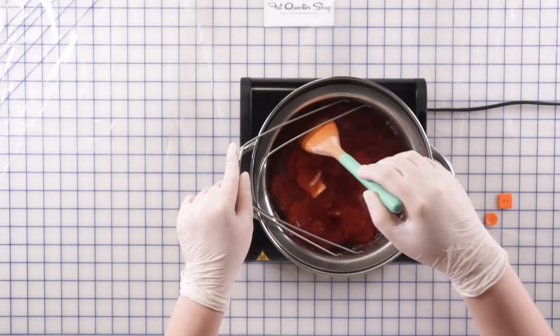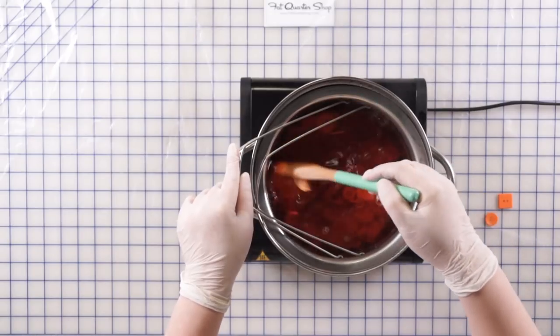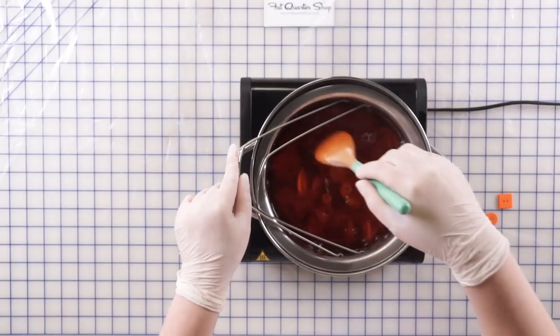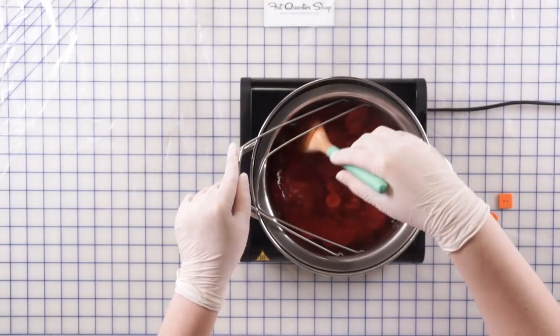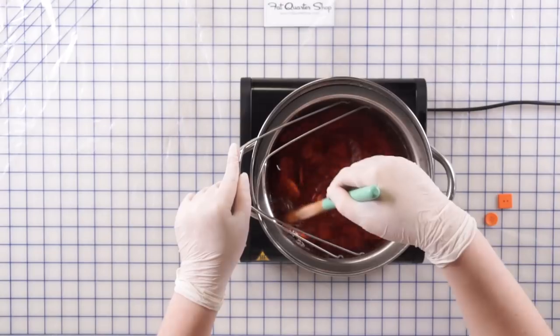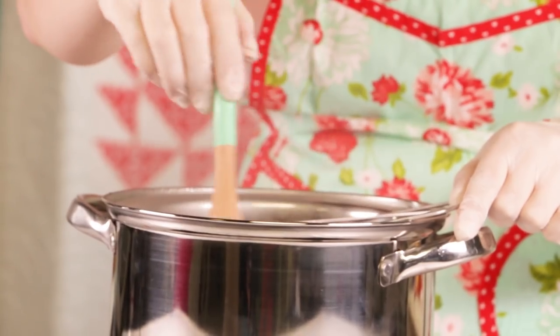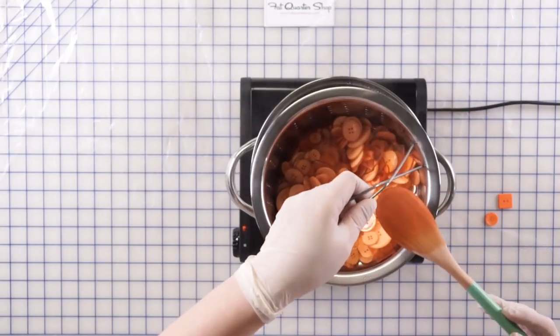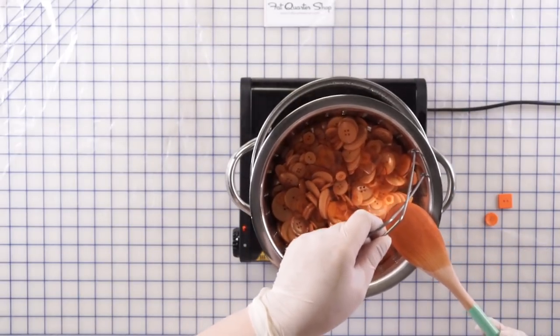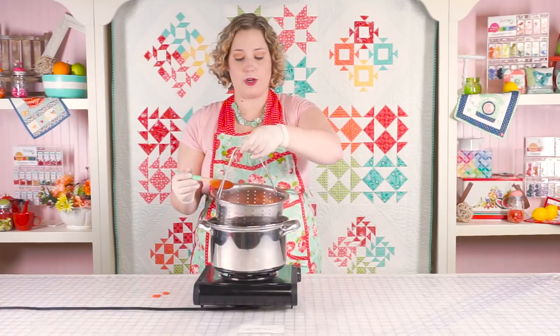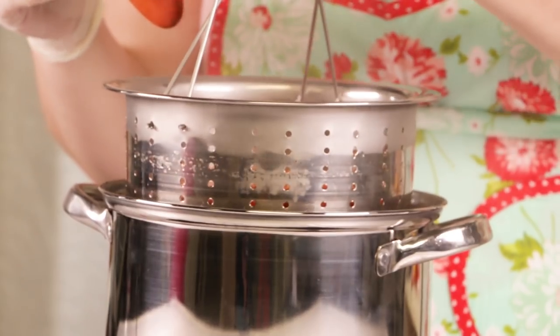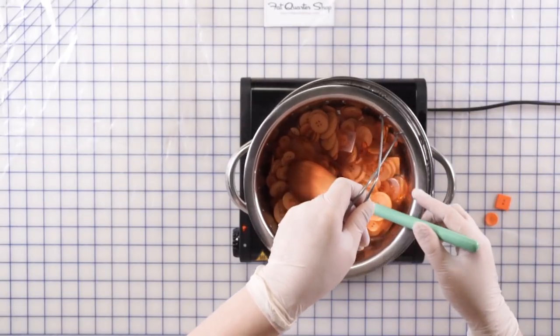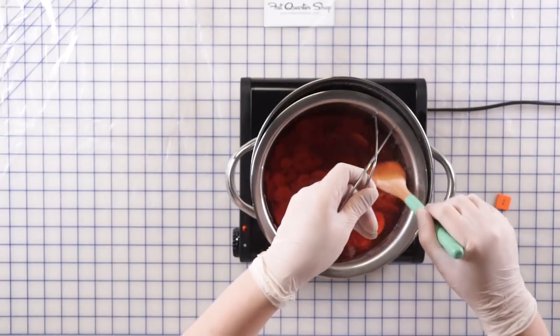So different button colors take different amounts of time to dye. For example, yellows take a long time. Oranges and reds usually go faster. So let's check again and see how we're doing. Oh, now we're very orange. Still not quite as dark as this button here. I'm going to compare the two buttons and this is not ready yet.